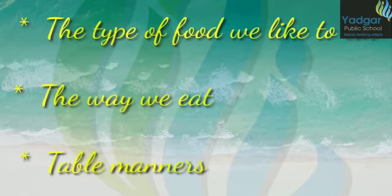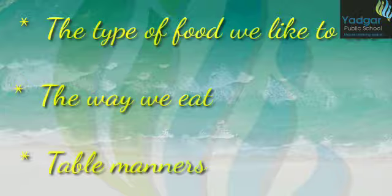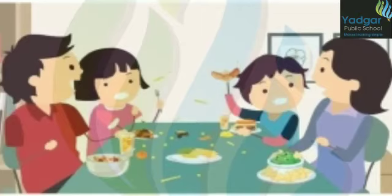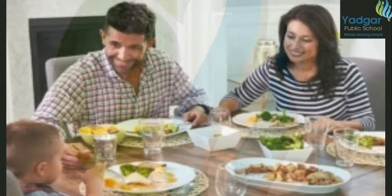While eating food, the type of food we like to eat, the way we eat, and table manners — these are all habits we learn from our family members. While having lunch or dinner, we should not spill food outside. We should eat food very neatly.